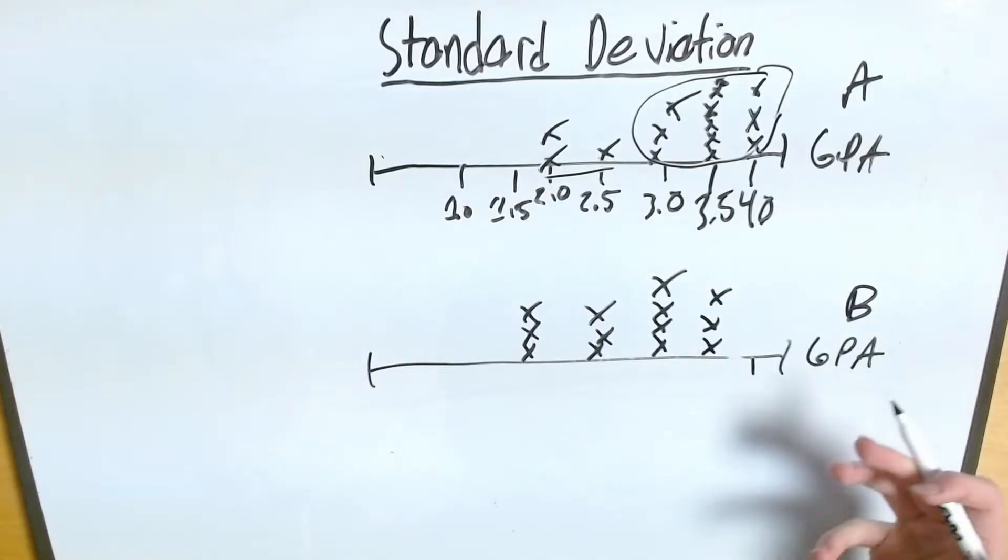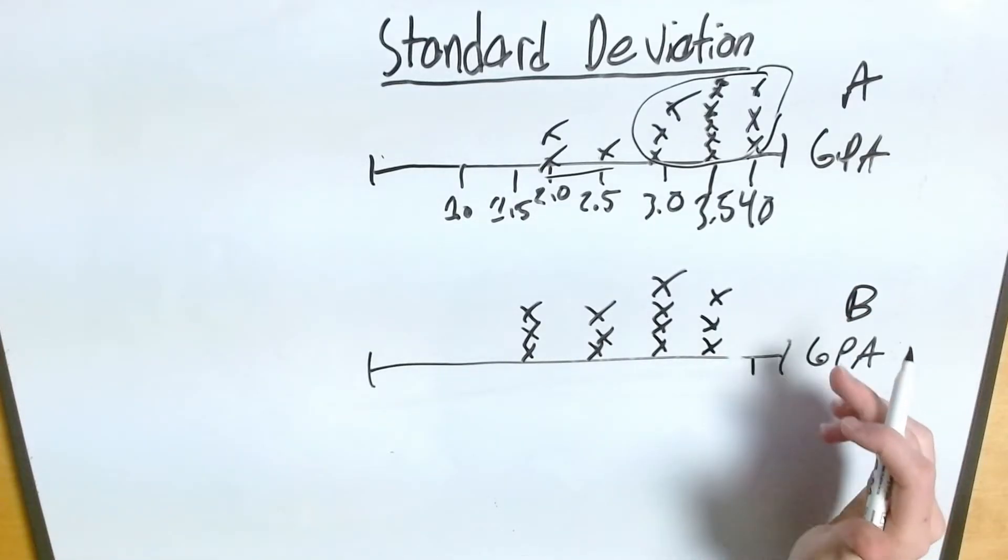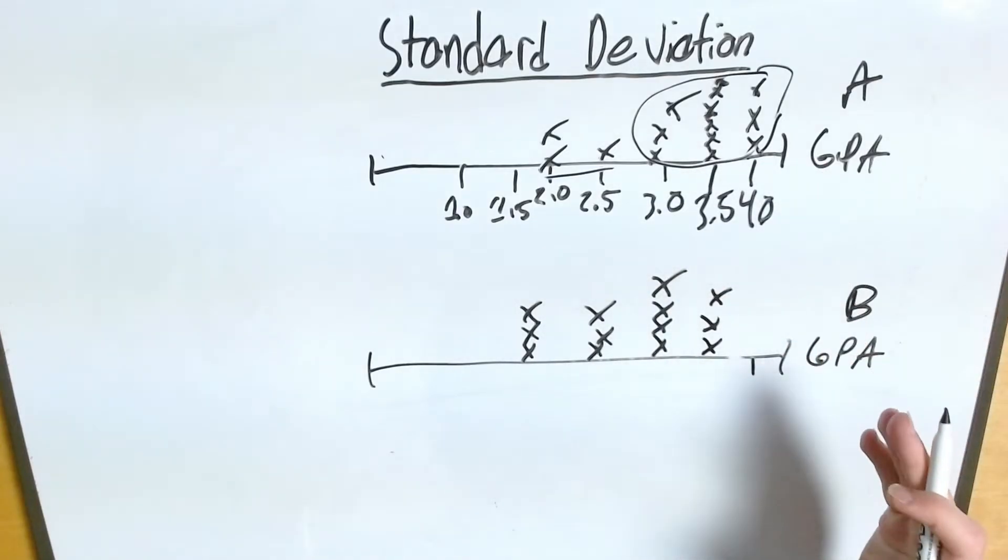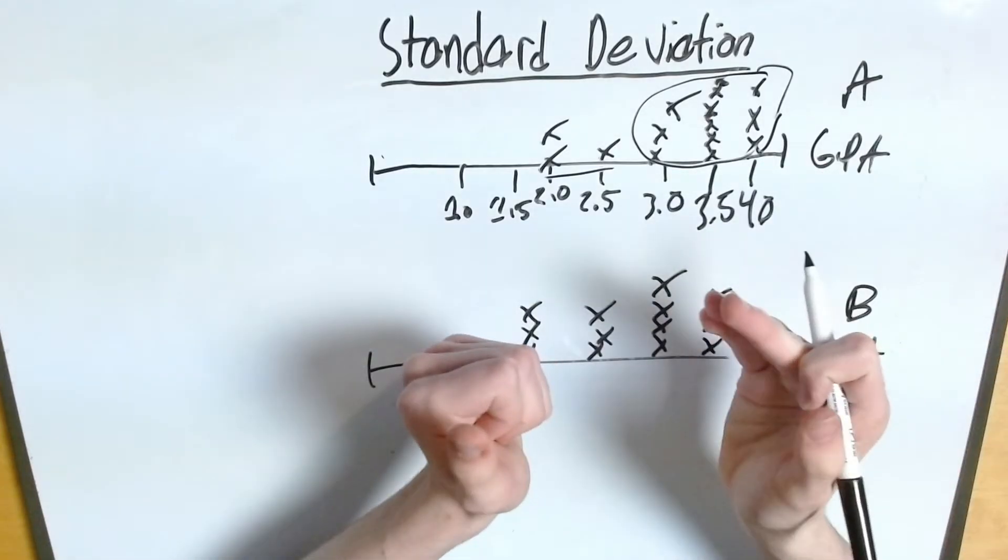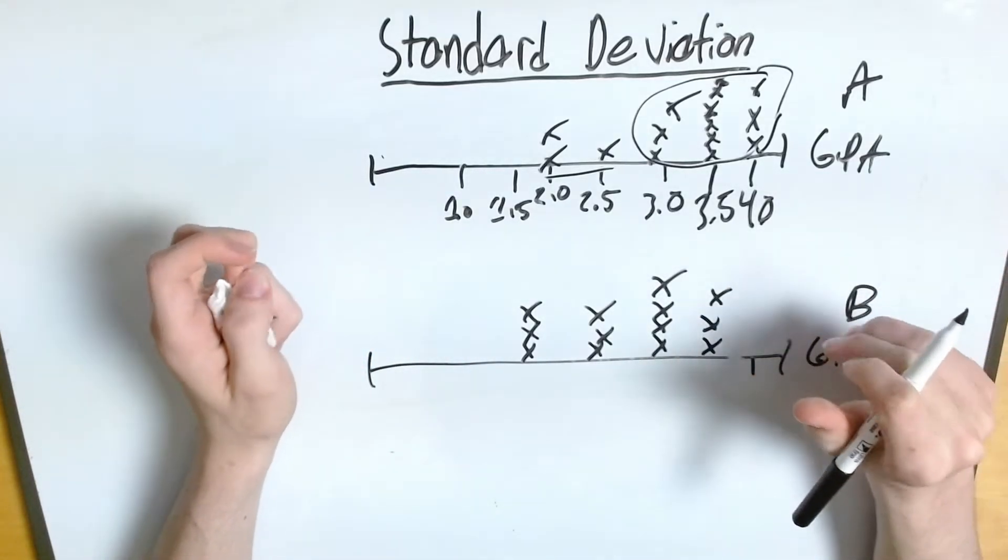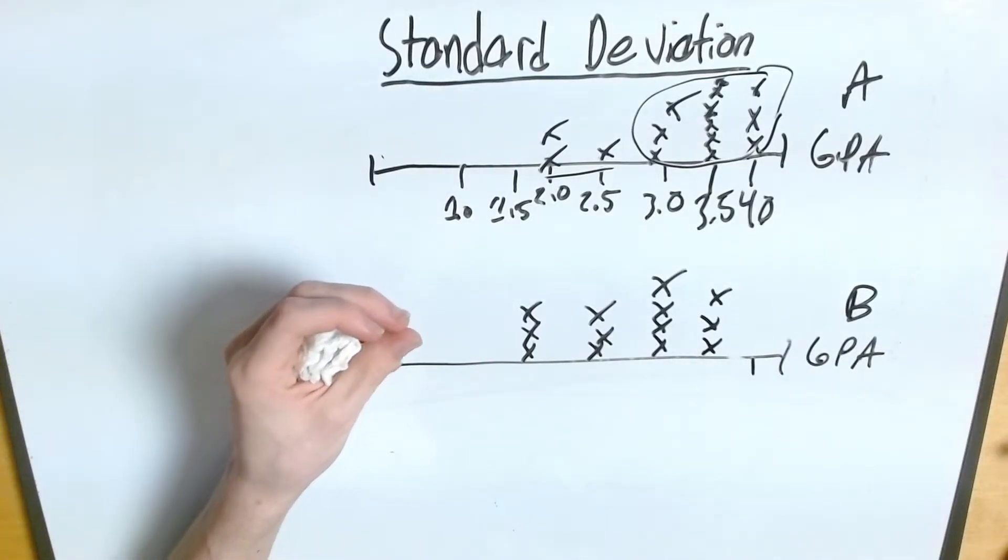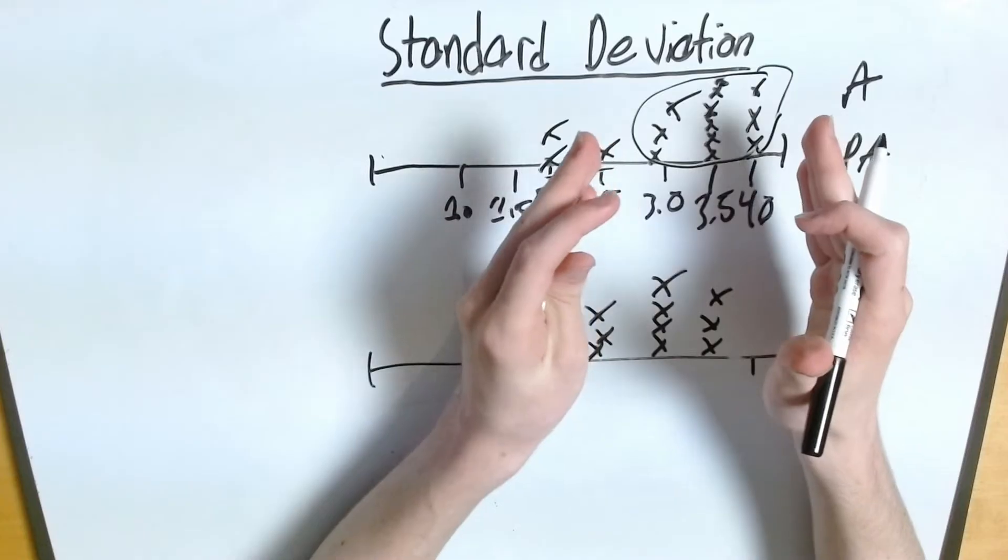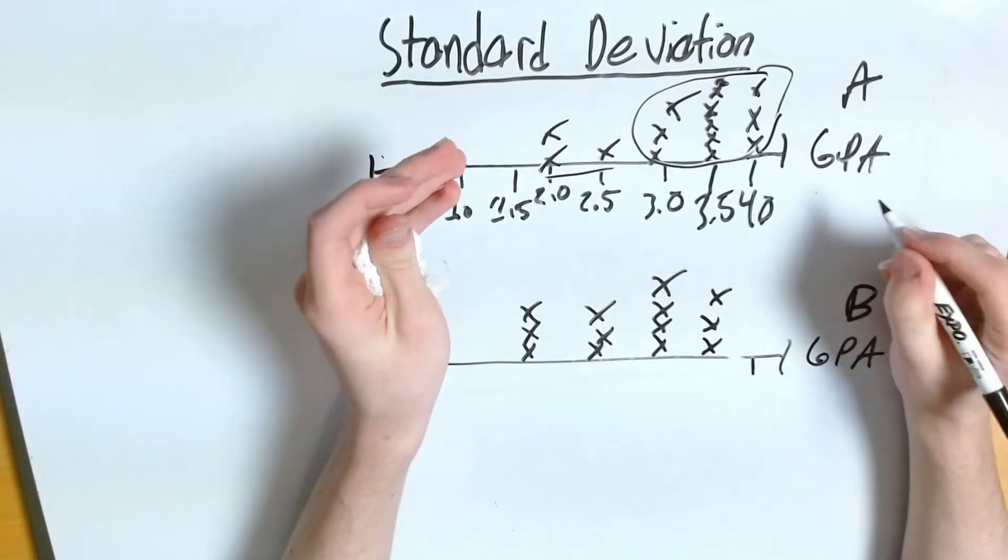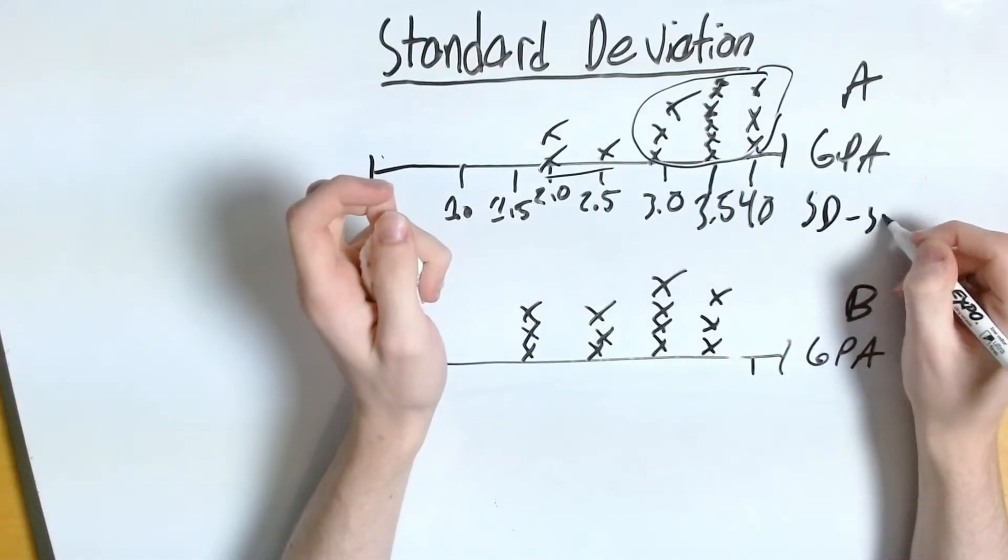That also tells me that since my mean is going to be in that 3.0 and 4.0 range, and most of my data is also in that range, my data, for the most part, is pretty close to my mean. Which means, if you'll excuse the pun, my standard deviation is going to be quite small. Because my data isn't that spread out, I'm going to have a smaller standard deviation. So, I'm going to say, standard deviation, or SD for short, is going to be small.